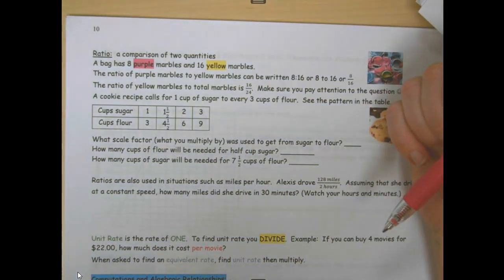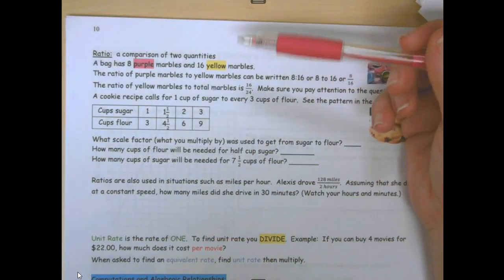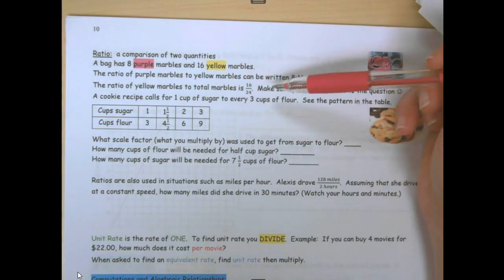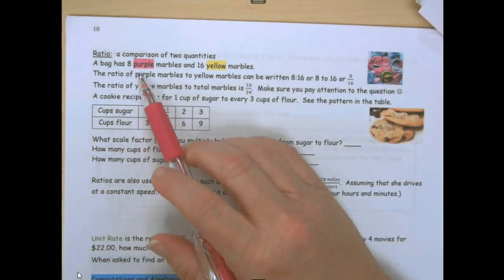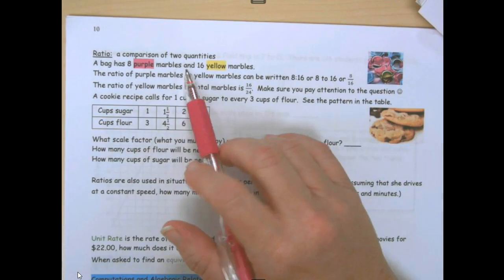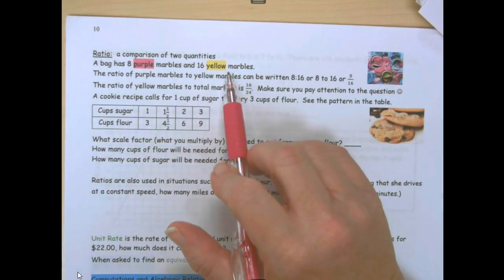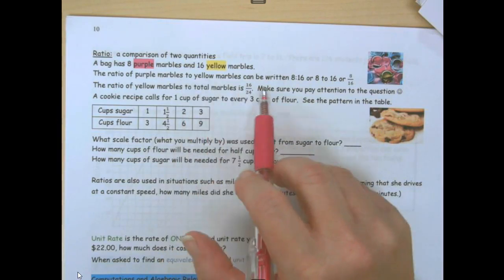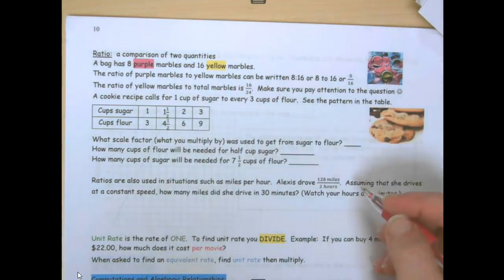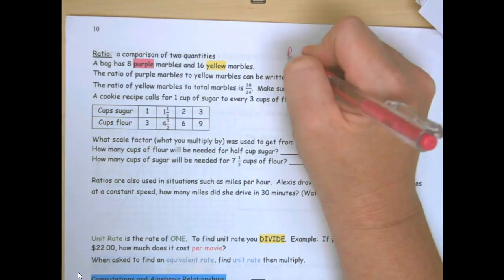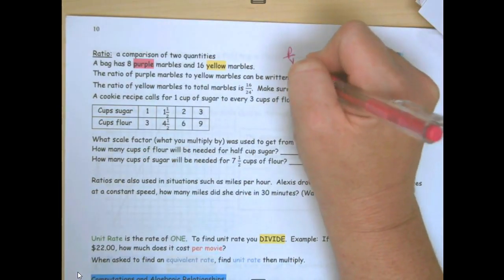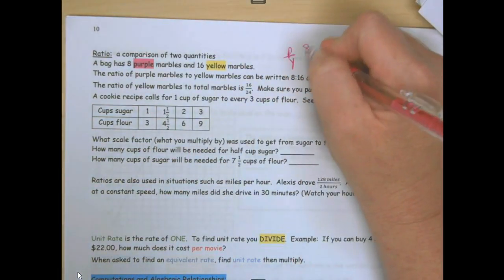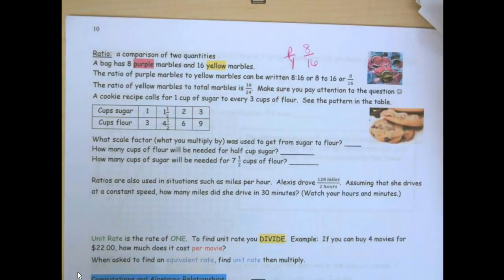Ratios compare. A ratio is a comparison of two quantities. A bag of 8 purple marbles and 16 yellow marbles. The ratio of purple marbles to yellow marbles can be written as 8 to 16. Remember, order does matter.